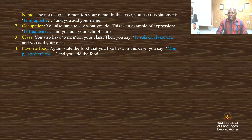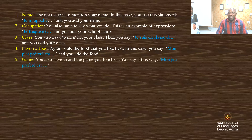Your favorite food — say the food you like best. You say 'Mon plat préféré est' and add the food. For example, 'Mon plat préféré est le riz à la sauce arachide' — my favorite food is rice and groundnut soup. Your favorite game — say the game you like best: 'Mon jeu préféré est' and add the game, for example 'le football.'